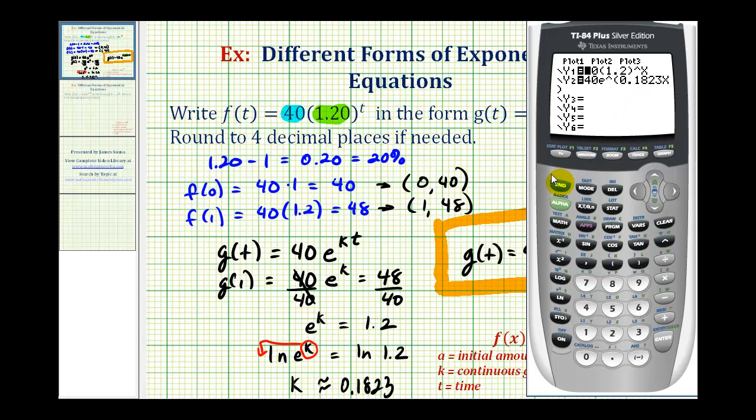I'm going to press second graph to access the table of values. If we compare the values of y1 and y2 for increasing values of t, or in this case x, notice how the y values are the same, or at least almost the same, because we did have to round k for y2. But this should be enough information to verify that our work is correct.